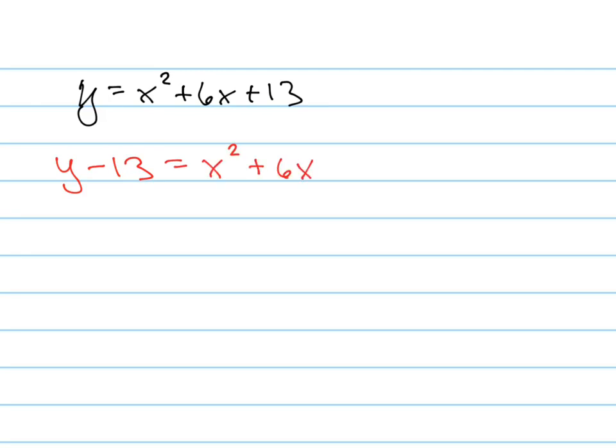So 6 divided by 2 is 3. 3 times 3 is 9. So add 9 to both sides. So that would be negative 4. y minus 4 equals, how is this going to factor now? x plus 3 squared. Plus 3, exactly.